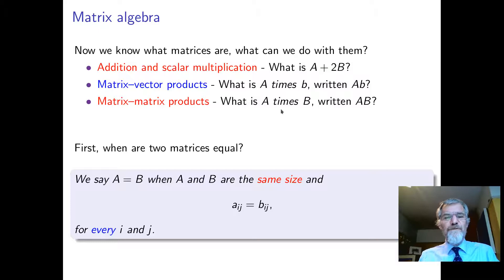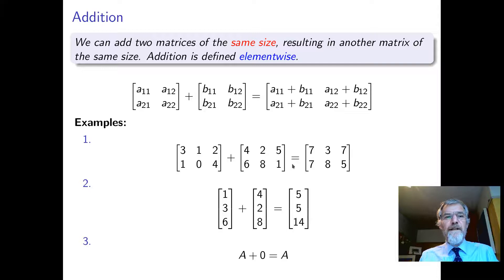First of all, when are two matrices actually equal? They have to be the same size, first of all, and all the elements have to correspond in the same place. So A_ij equals B_ij for every i and j that's valid.